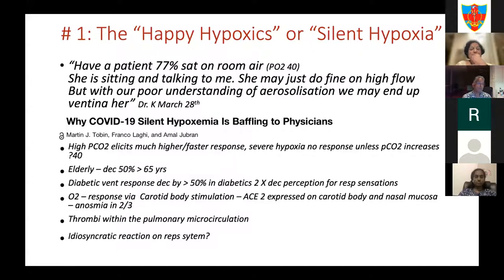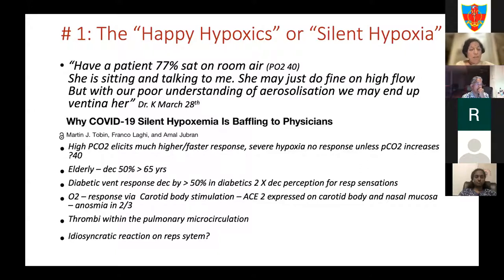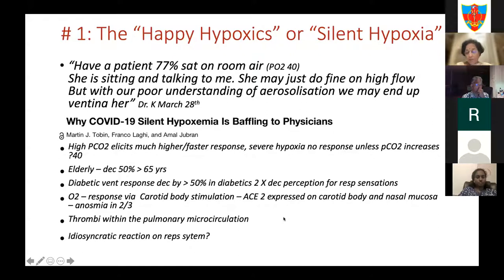Why do these patients have silent hypoxia? A colleague reported a patient at 77% saturation on room air who was talking normally. Theories about silent hypoxia include: elderly patients and diabetics have decreased perception of hypoxia; ACE2 is expressed on the carotid body and nasal mucosa—which is why anosmia occurs—and this may impair hypoxia perception. There is something called patient self-induced lung injury (PSILI), where patients taking large breaths may not be helping their lungs despite appearing well.